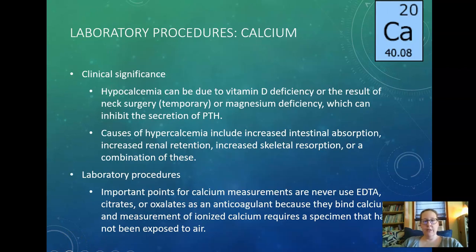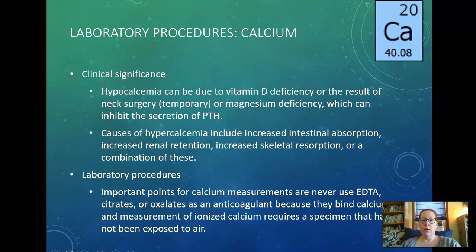The lab significance of calcium: hypocalcemia or low calcium levels can be due to vitamin D deficiency — probably the number one cause. When assessing for osteoporosis, doctors assess calcium and vitamin D levels and often prescribe both supplements together, because you need vitamin D to absorb calcium. Hypocalcemia can also result from neck surgery disrupting parathyroid hormone, or magnesium deficiency, which interferes with parathyroid hormone secretion. Magnesium deficiency and vitamin D deficiency are both more common than you think.